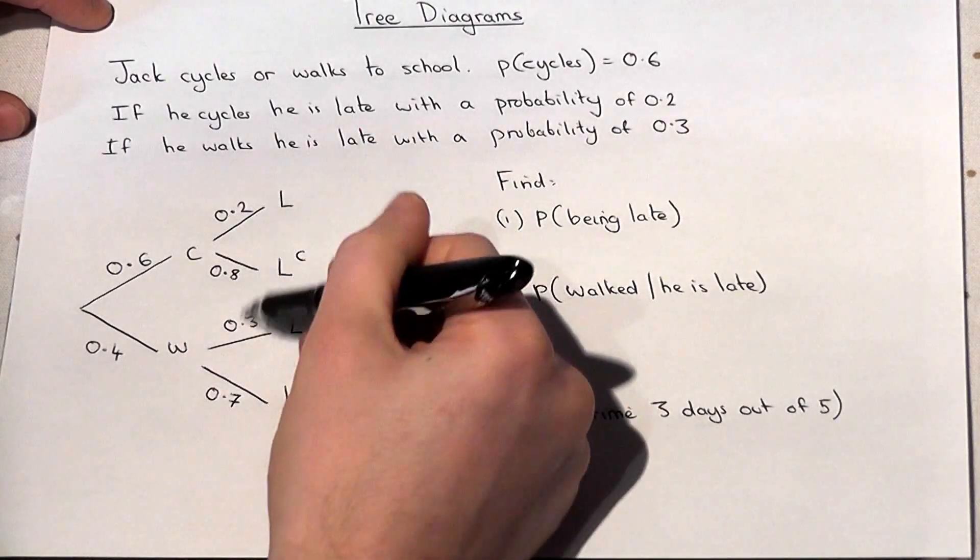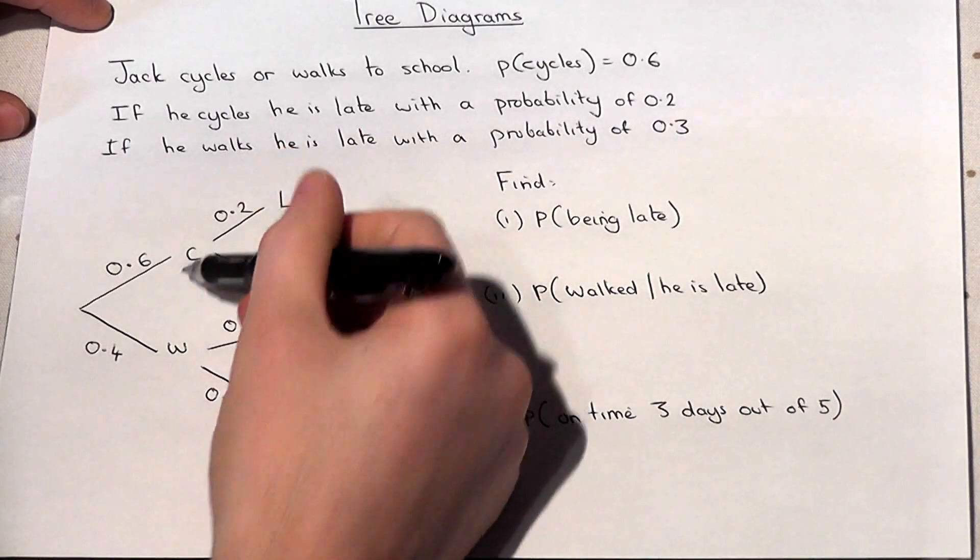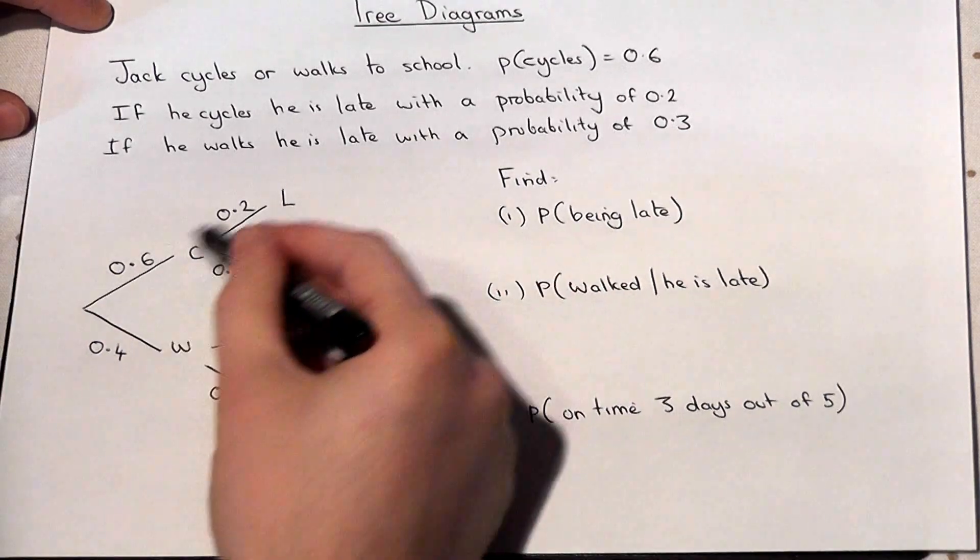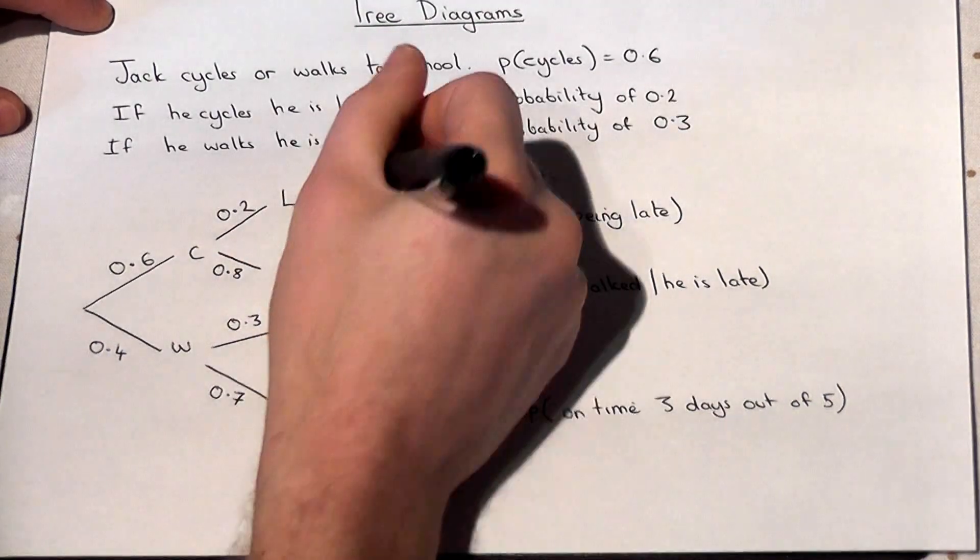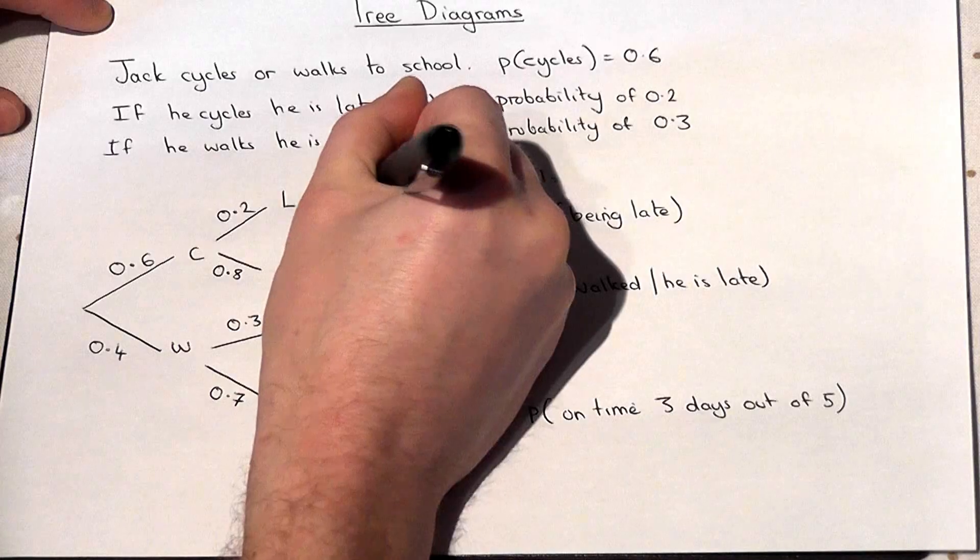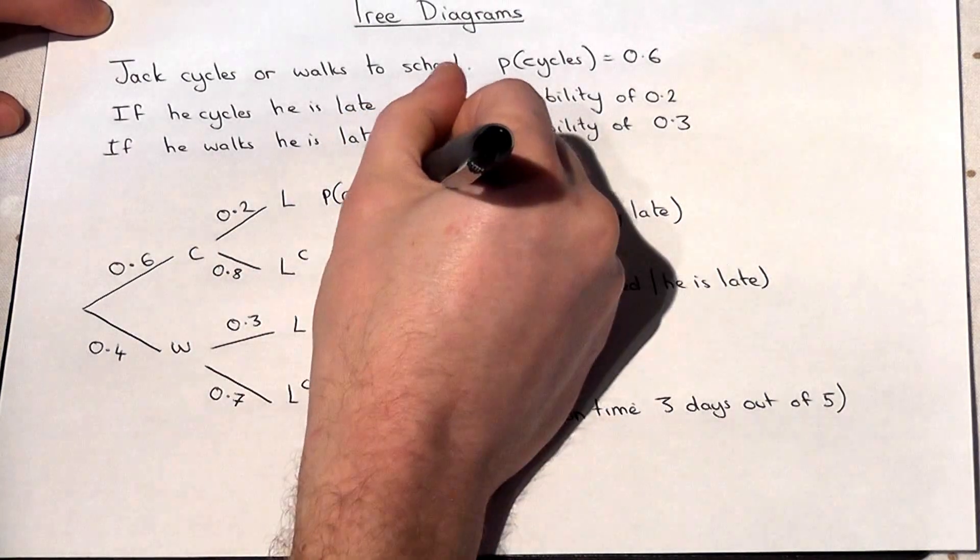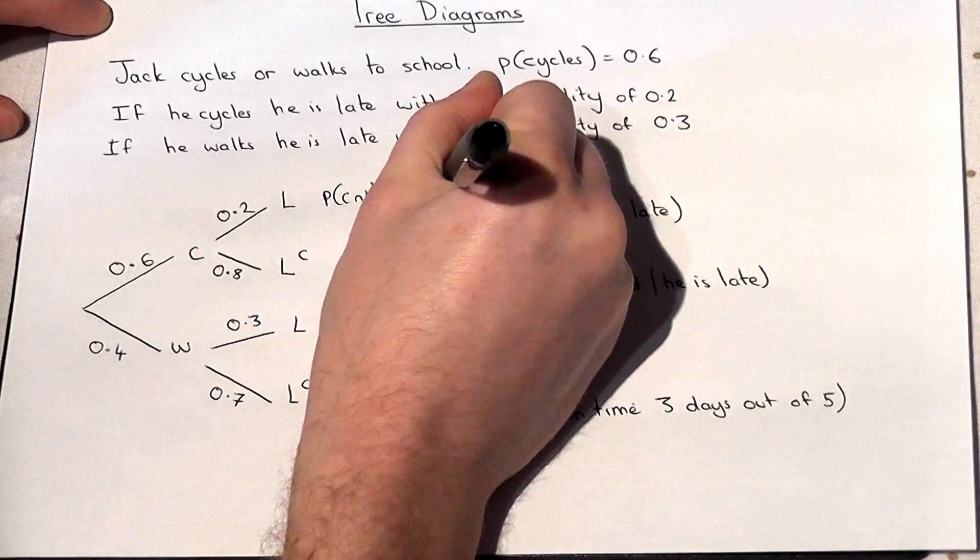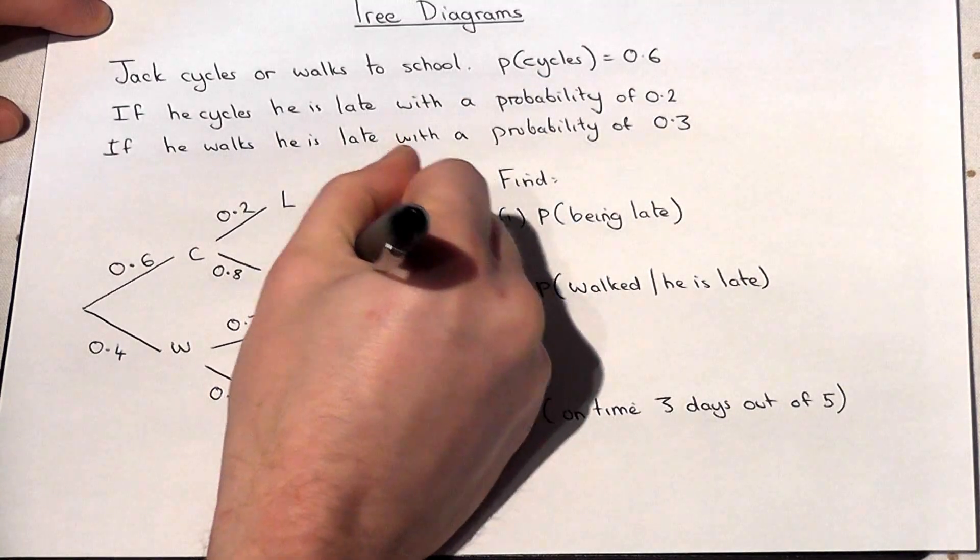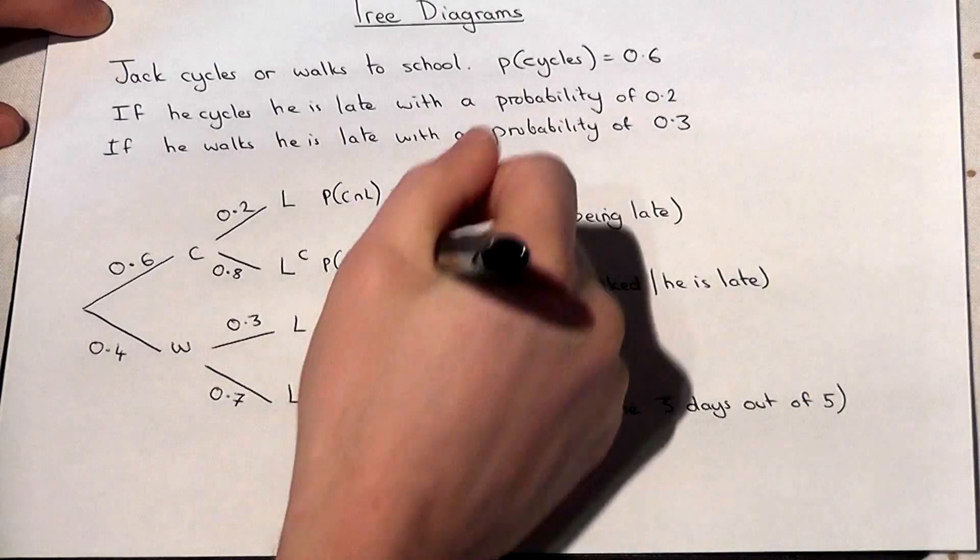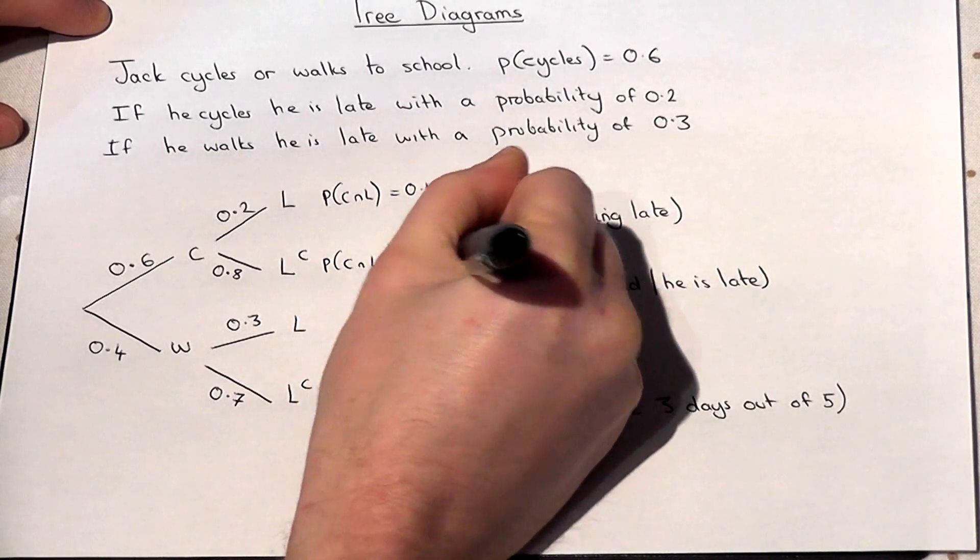The chance he is late depends upon whether he cycles or walks. We can then find the chance of each of the routes through the tree diagram. The chance of cycling and being late is then 0.6 times 0.2 which is 0.12. The chance of cycling and not being late, 0.6 times 0.8, is 0.48.